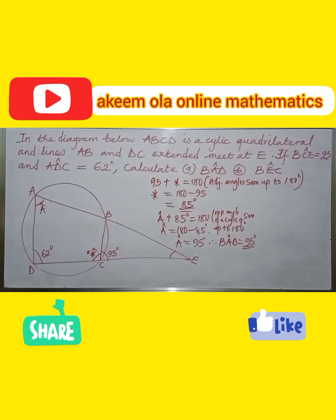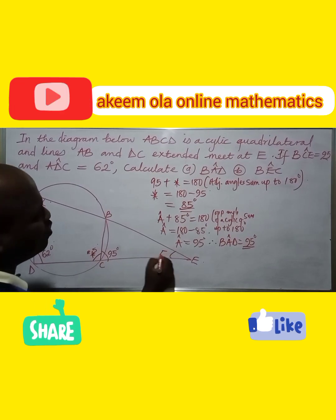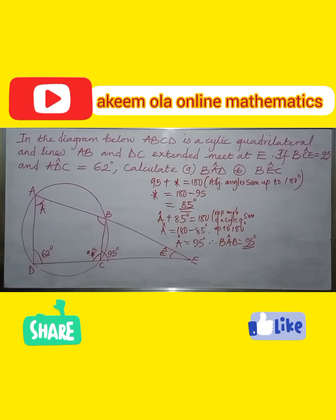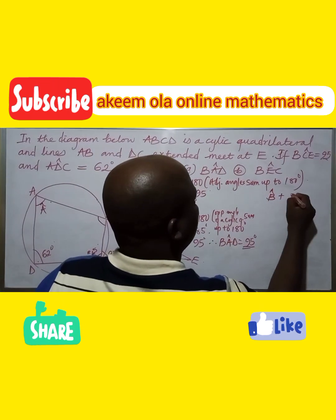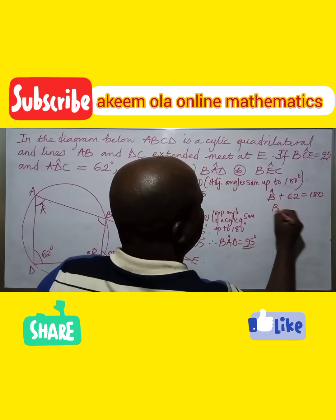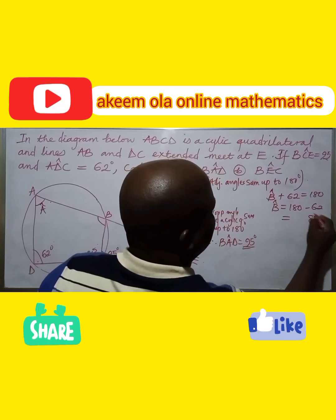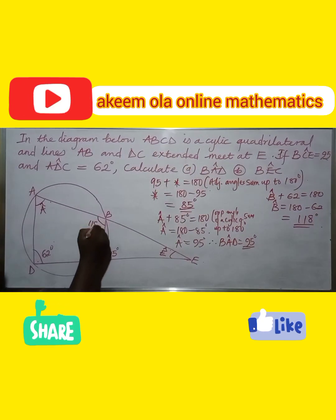Now we consider the second question, which is to find angle BEC. We are looking for angle E. We observe that angle B and angle ADC are opposite angles of the cyclic quadrilateral. That means angle B plus 62° equals 180°, so angle B equals 180° minus 62°, which gives us 118°. So angle ABC is 118°.